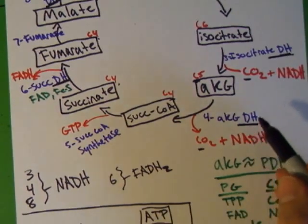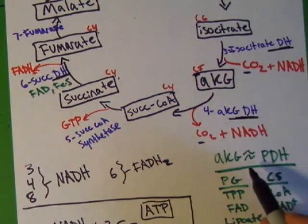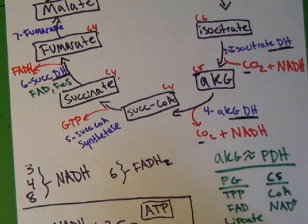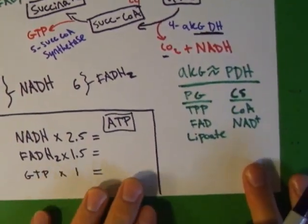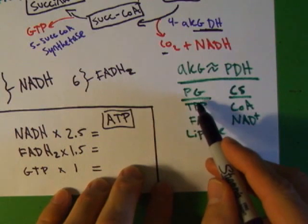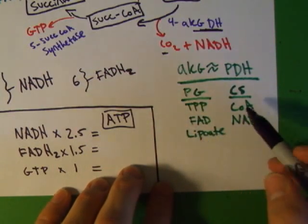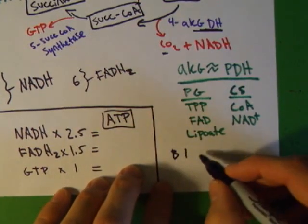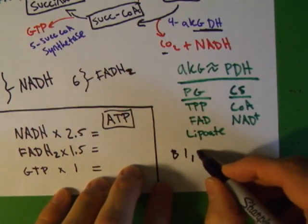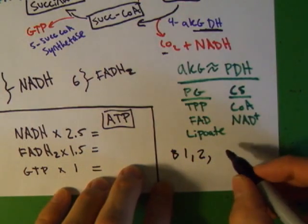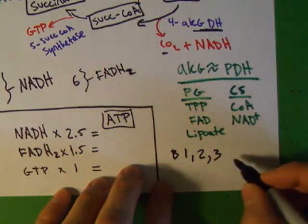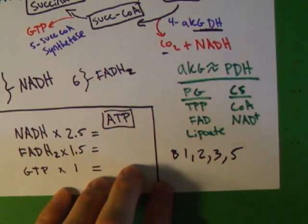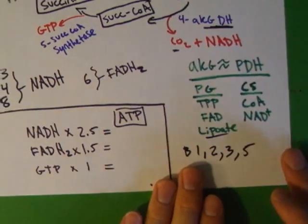Alpha-ketoglutarate dehydrogenase is very similar to the PDH complex. It has all of the same prosthetic groups, all of the same co-substrates. So, vitamin 1, thiamine, 2, riboflavin, 3, niacin, and 5, pantothenate. And it's also lipoate-dependent. The regulation of it is more simple.